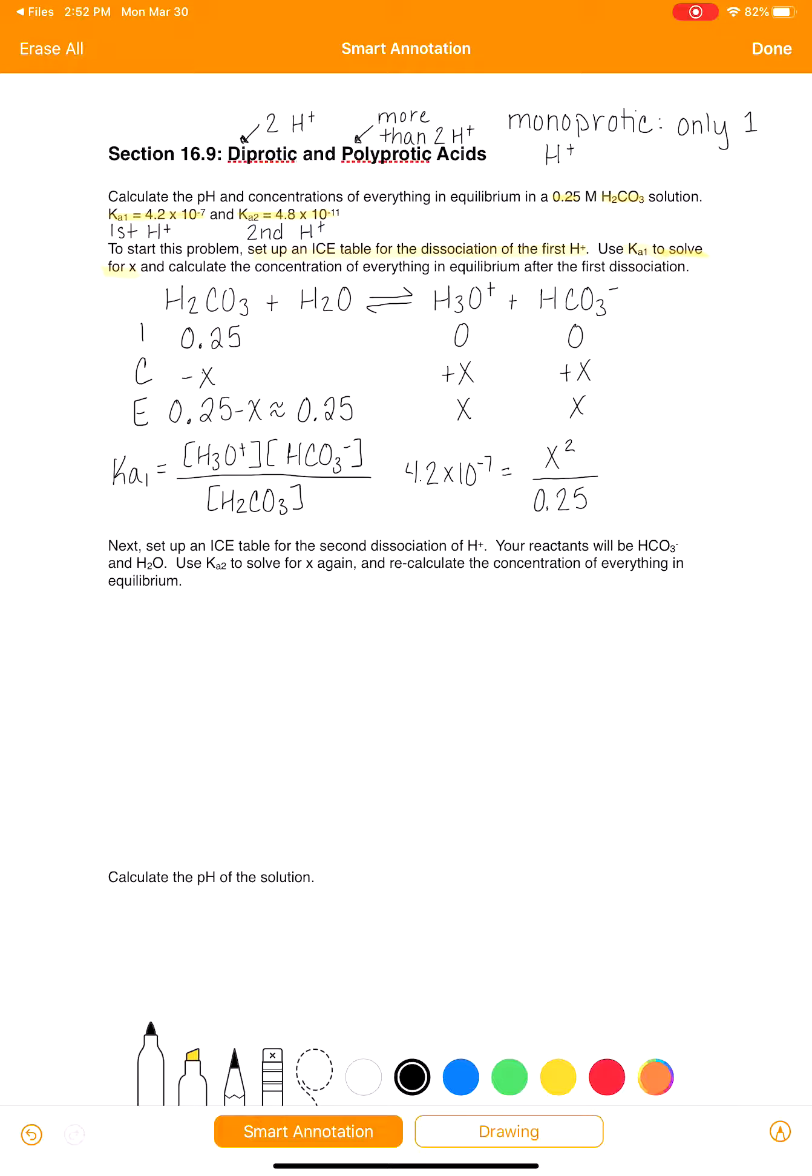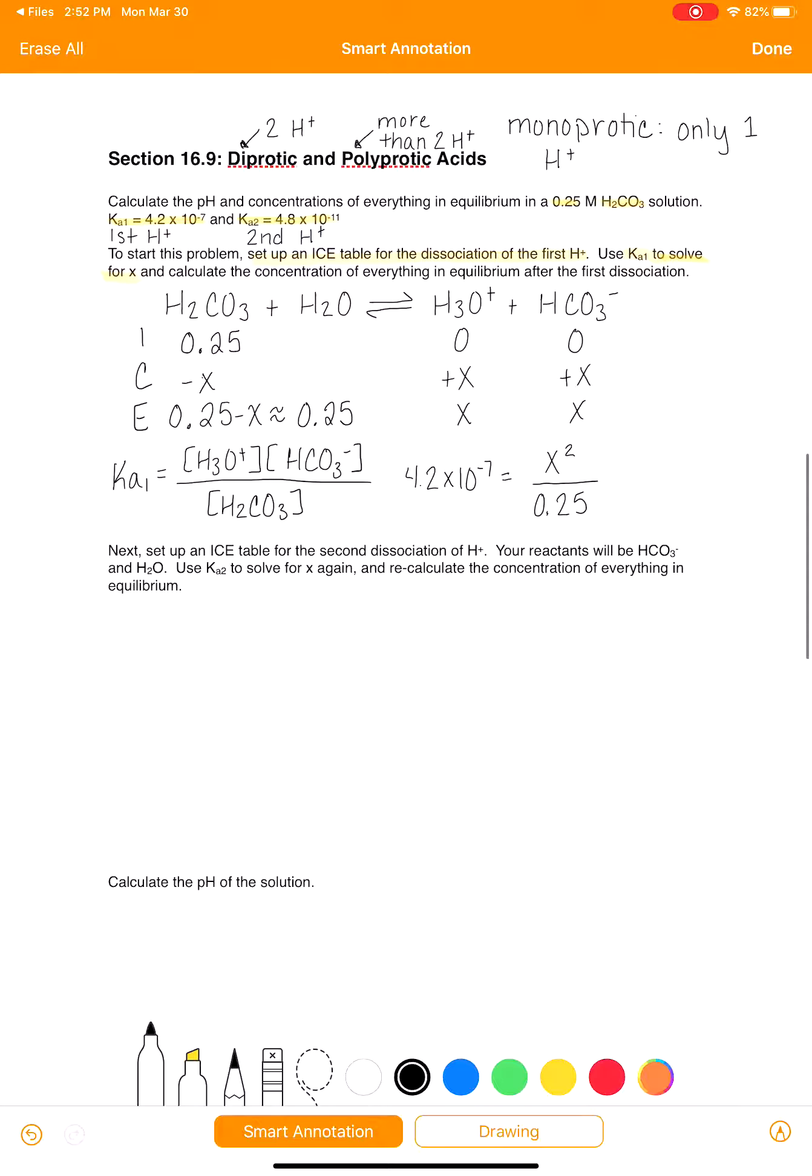So now we need to get our calculators out and solve for X. It's going to be 4.27 times 10 to the minus 7, multiply that by 0.25 and then take the square root. X is 3.24 times 10 to the negative 4.